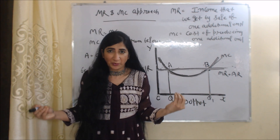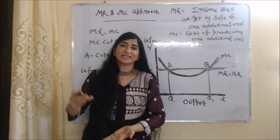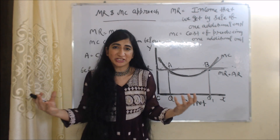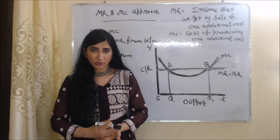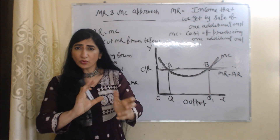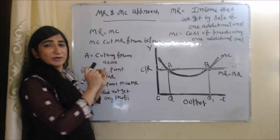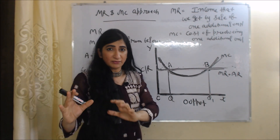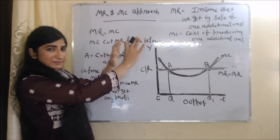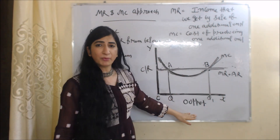Now we will see the MR and MC approach. MR is marginal revenue — the income received from the sale of one additional unit. MC is marginal cost — the cost of producing one additional unit. In order to get equilibrium, two conditions must be satisfied: first, MR equal to MC; and second, MC must cut MR from below.